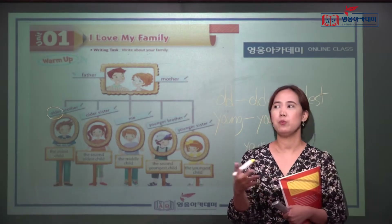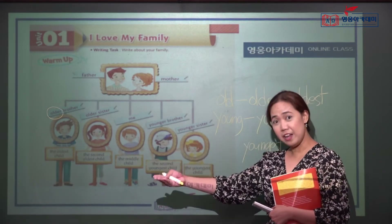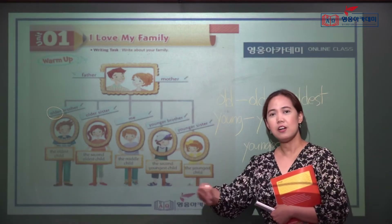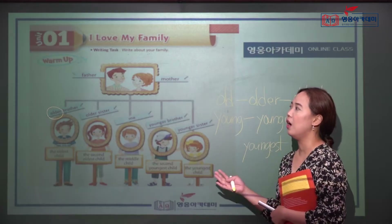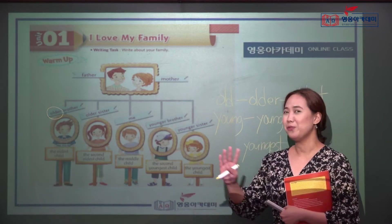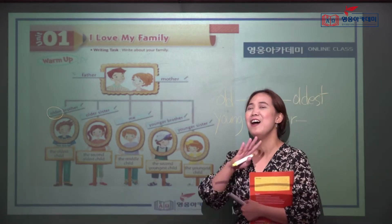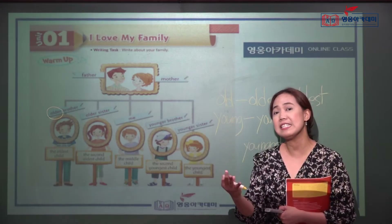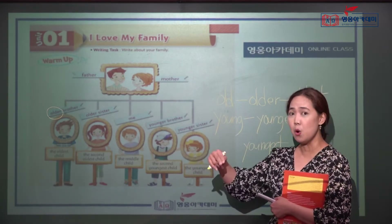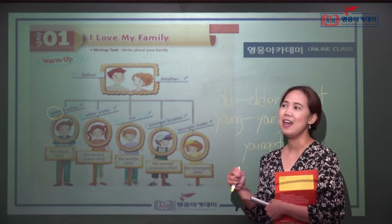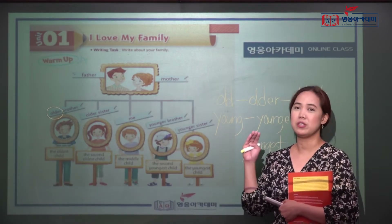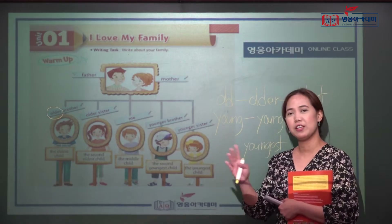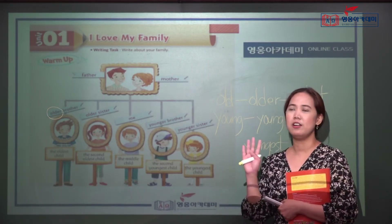Let's try another adjective. 'Pretty' — prettier — prettiest. 'Large' — larger — largest. How about 'beautiful'? Can I say 'beautiful-er' and 'beautiful-est'? No. The secret is 'beautiful' already has three syllables, so you have to say 'more beautiful' and 'most beautiful.' The same with 'important': more important, most important. If the adjective has two, three, or more syllables, you must use 'more' or 'most' — no -er, no -est.